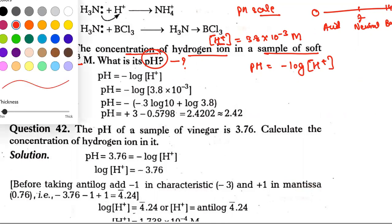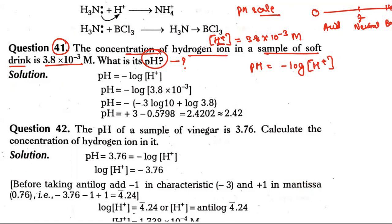Now let's see, in this question we're already given H+ ion concentration. What we have to do is take the -log of 3.8 × 10^-3 because pH is the negative log of H+ ion concentration.